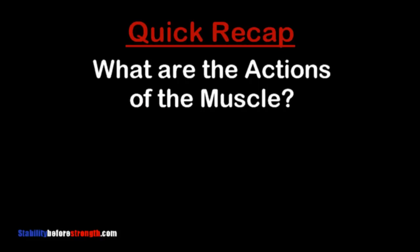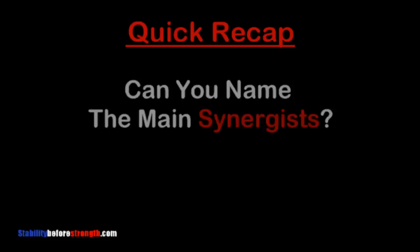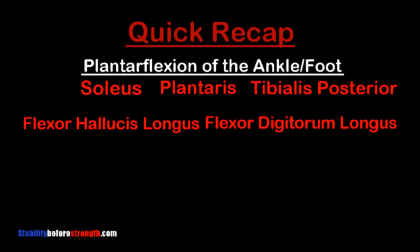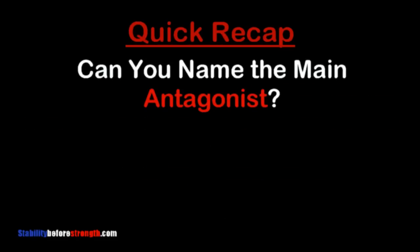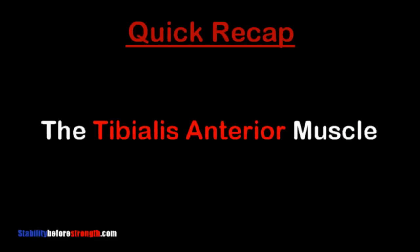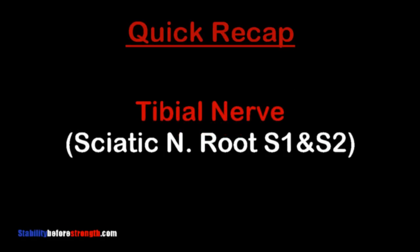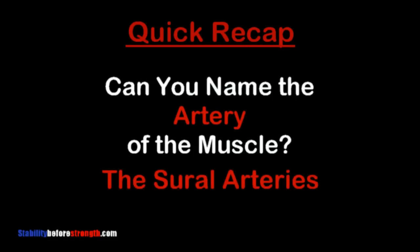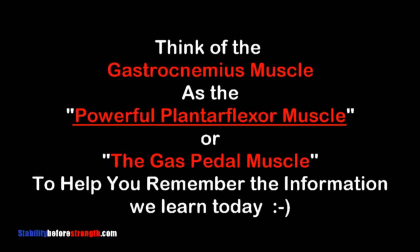The main actions are plantar flexion and knee flexion. The main synergists are the soleus, plantaris, tibialis posterior, flexor hallucis longus, flexor digitorum longus, and the hamstring muscle group. The main antagonist is the tibialis anterior muscle. The nerve is the tibial nerve from sciatic nerve root S1 and S2. The artery providing blood to the muscle is the sural arteries. Just think of the gastrocnemius as the powerful plantar flexor muscle to help you recall the information.